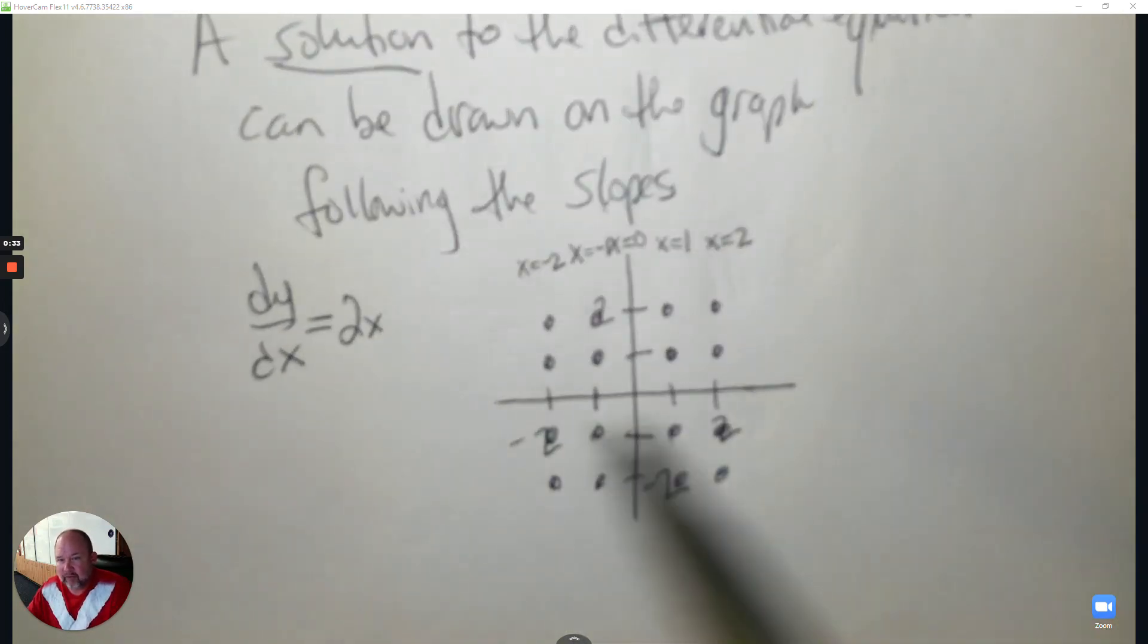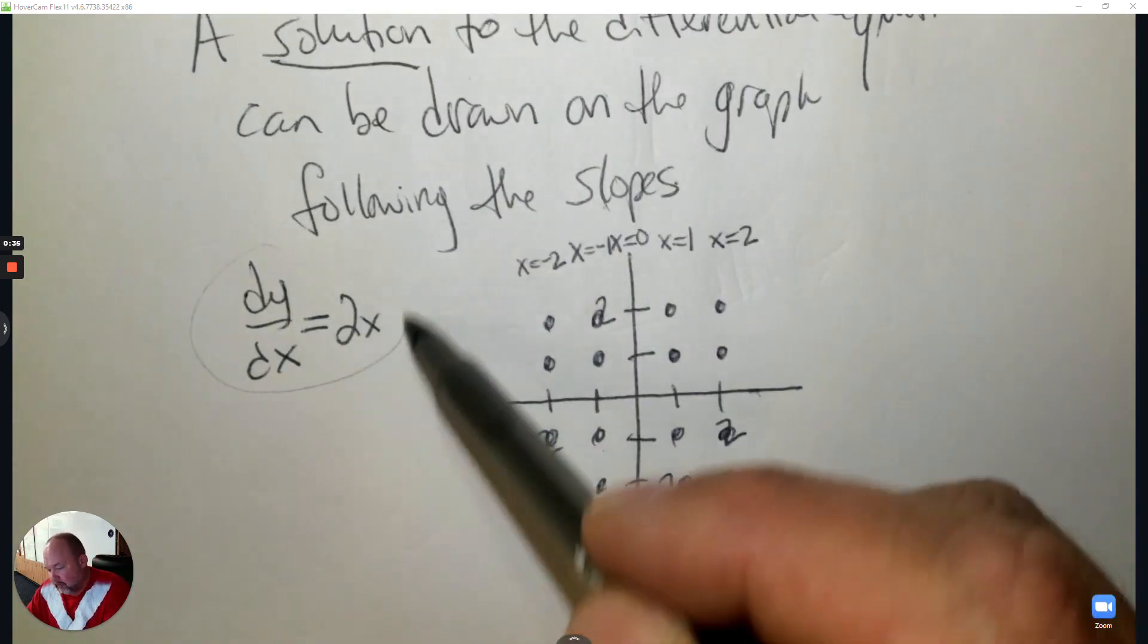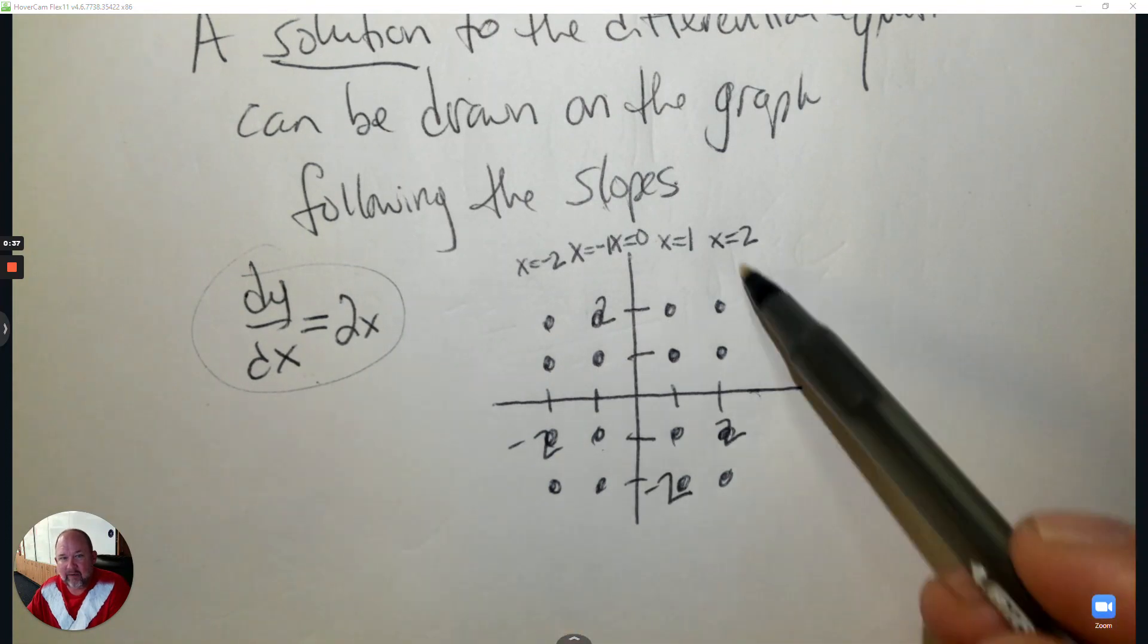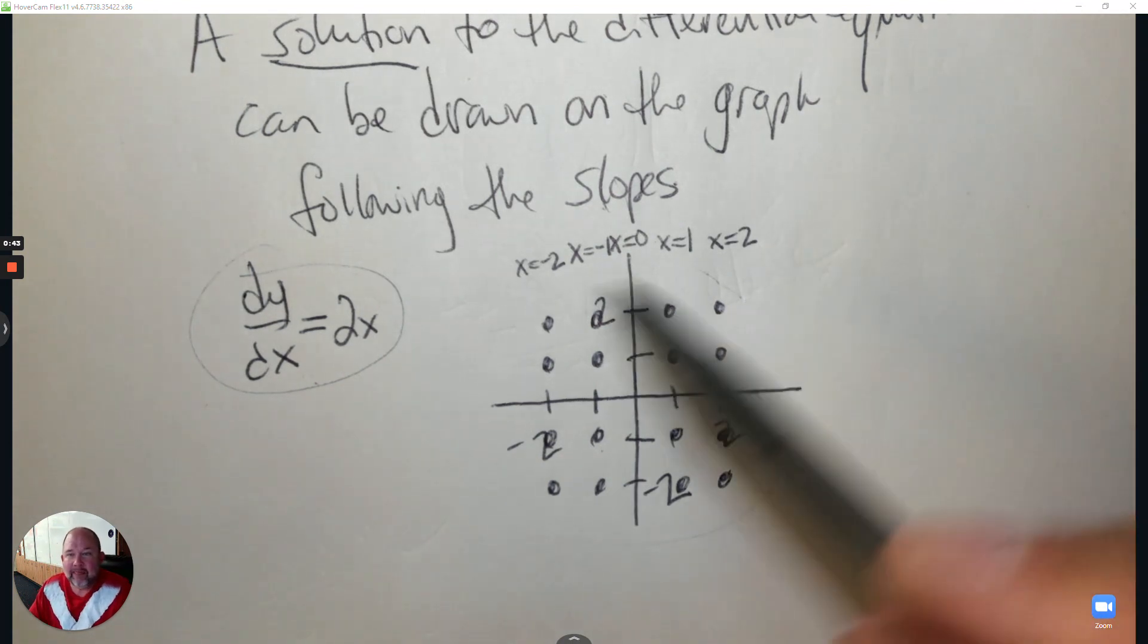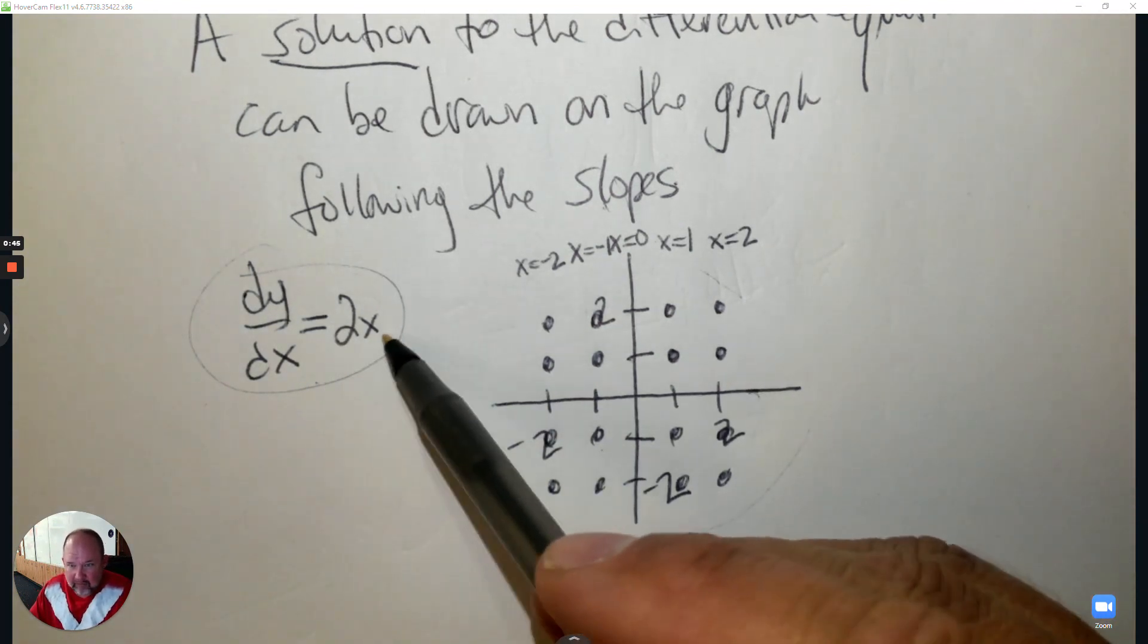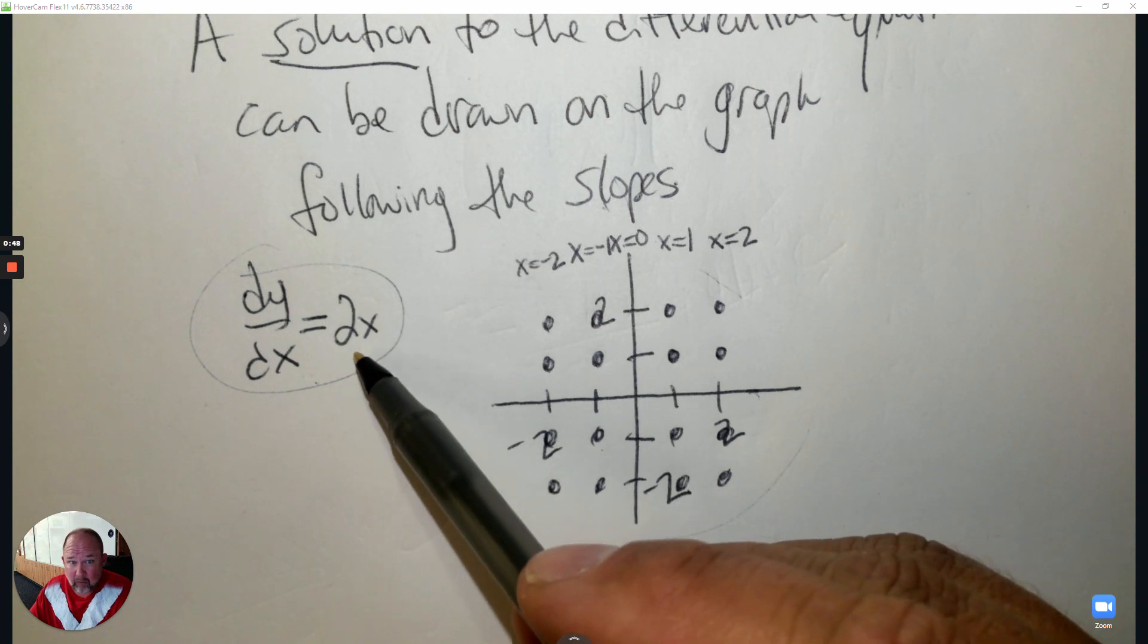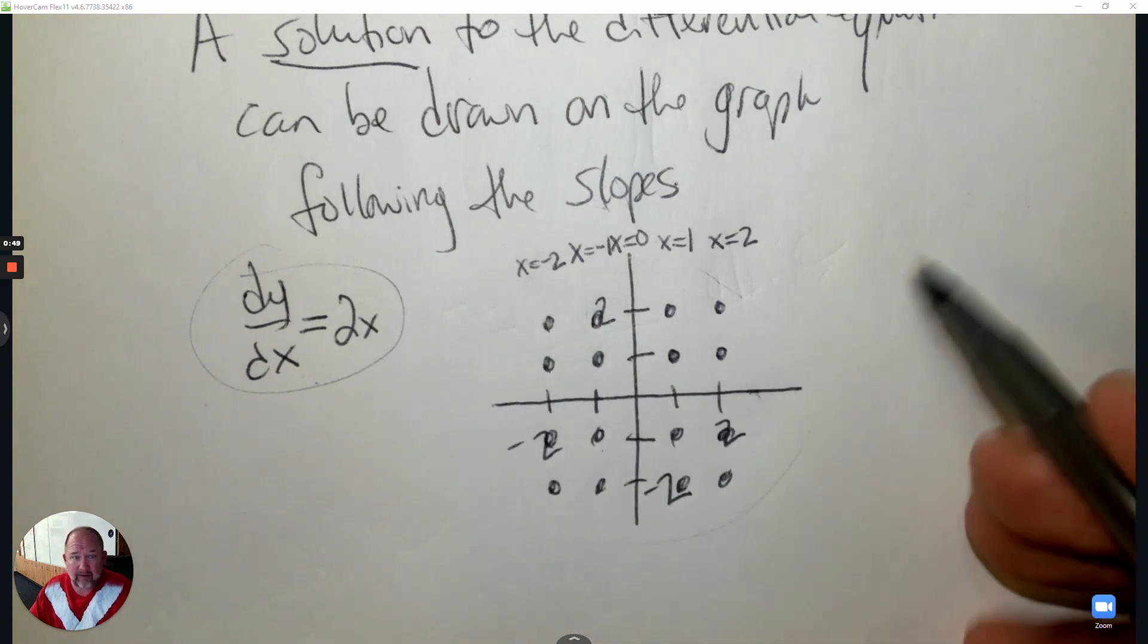Here's an example. Press pause, write this equation down, draw this graph. Then when you're ready, press play. This differential equation only involves x. Sometimes it only involves y, and then it would be horizontal.